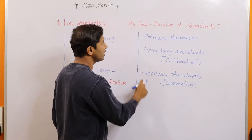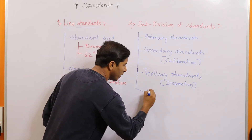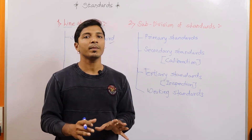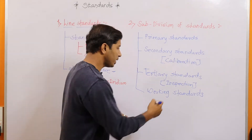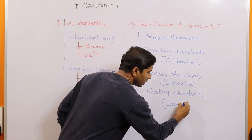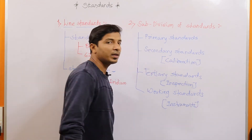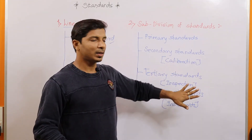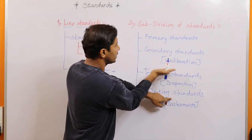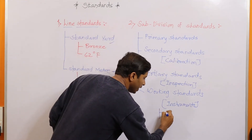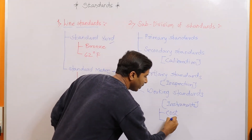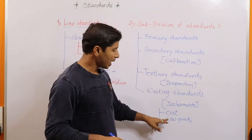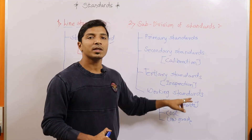The last subtype of subdivisional standards is working standards. Working standards are actually involved in measurements by operators and can be called instruments — those actually used in industries for measurement purposes and handled by operators. Working standards are copies of tertiary, secondary, and primary standards, but they are made with low-cost, low-grade materials, so the cost of manufacturing these instruments is less.